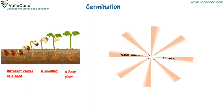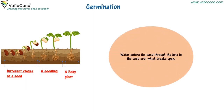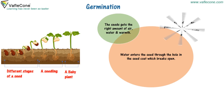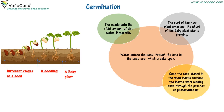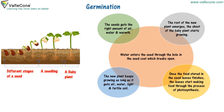Germination. Water enters the seed through the hole in the seed coat, which breaks open. The seed gets the right amount of air, water, and warmth. The root of the new plant emerges, and the shoot of the baby plant starts growing. Once the food stored in the seed leaves finishes, the leaves start making food through the process of photosynthesis. The new plant keeps growing as long as it gets air, water, light, and fertile soil.